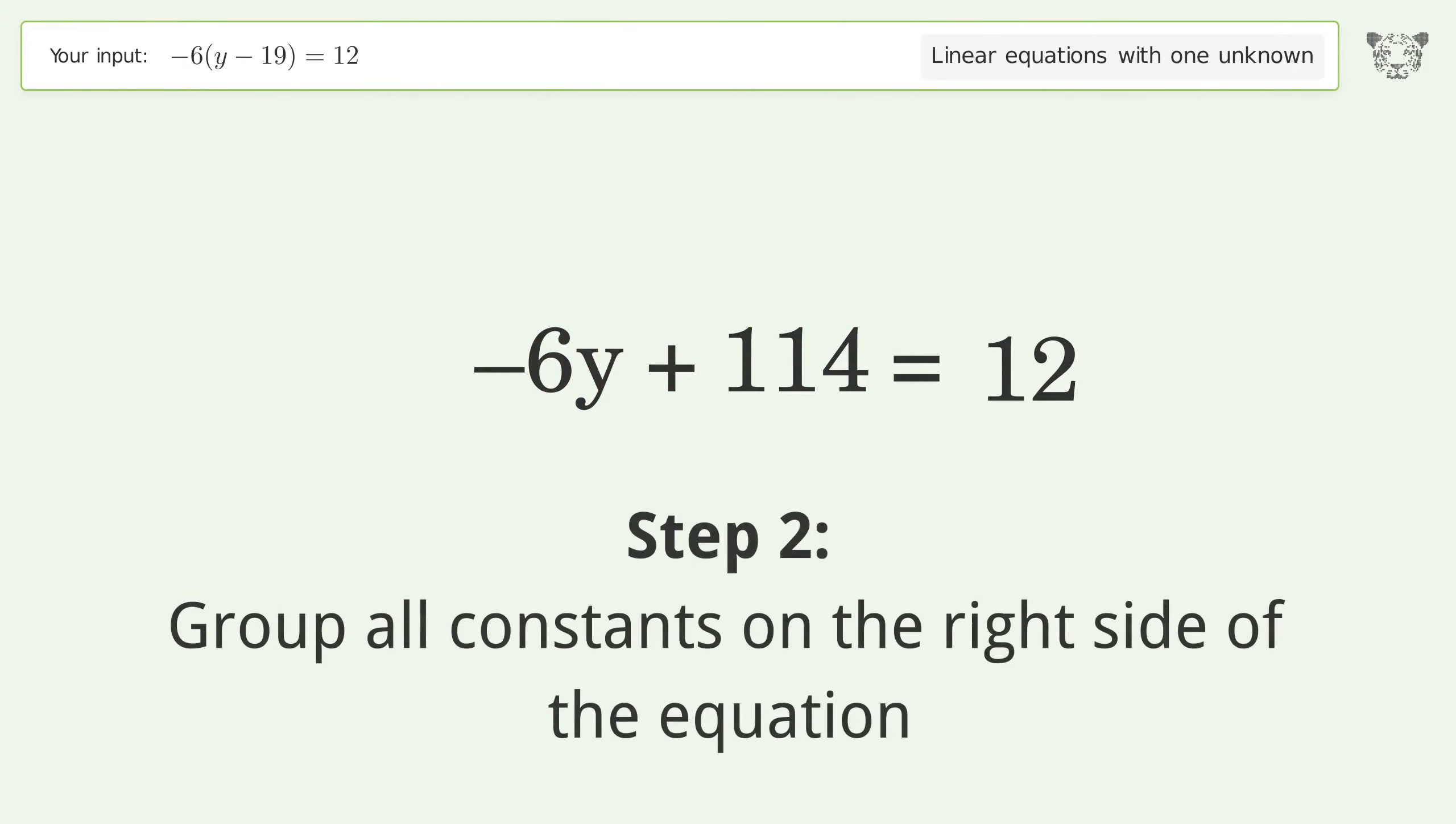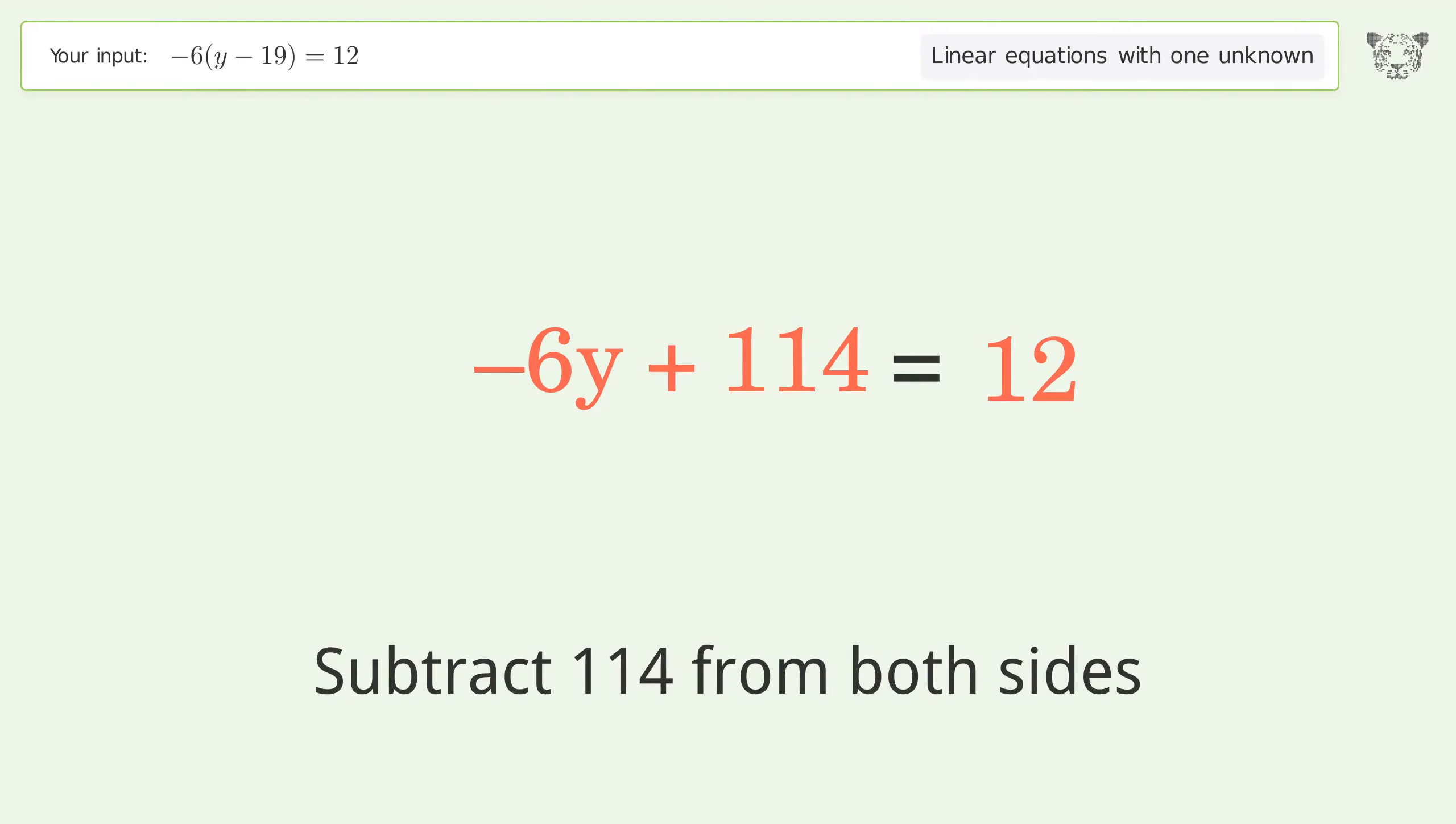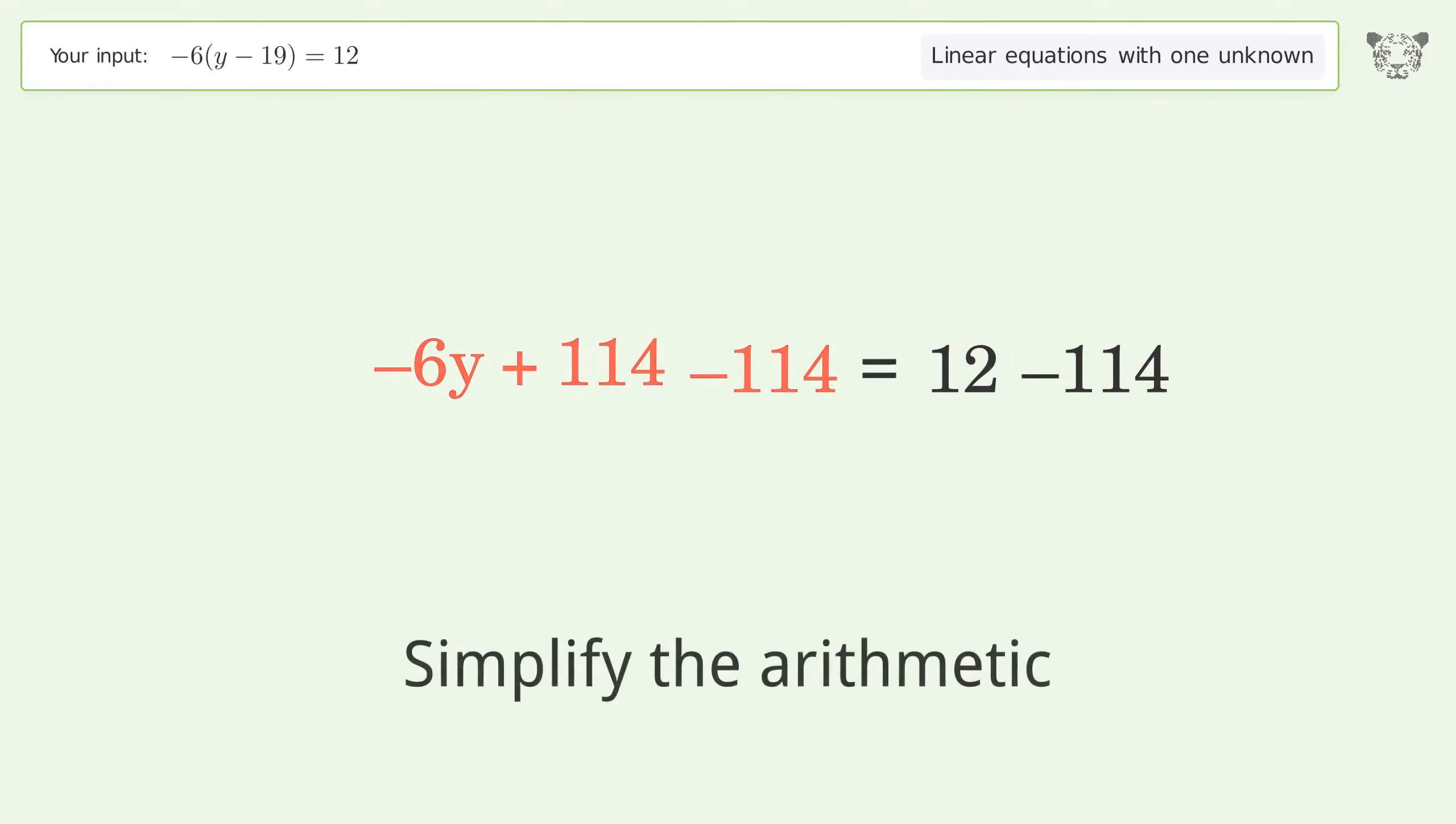Group all constants on the right side of the equation. Subtract 114 from both sides. Simplify the arithmetic.